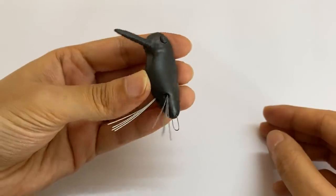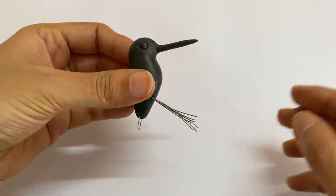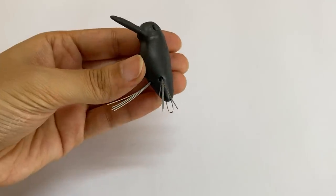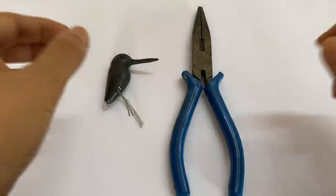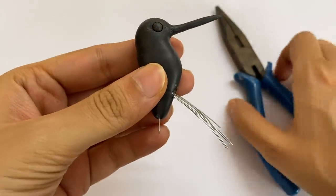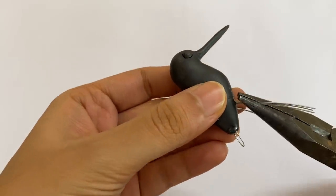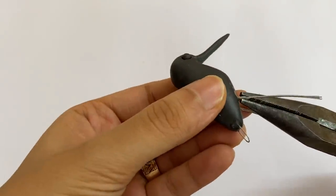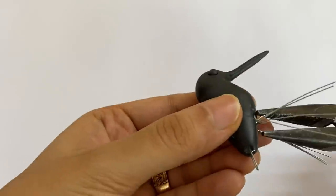Attach the pieces of wire using Feviquik or Araldite. If you are using Araldite, leave it to dry overnight. Once you have attached all the pieces of wire to the bird's body, let's start working on the talons.